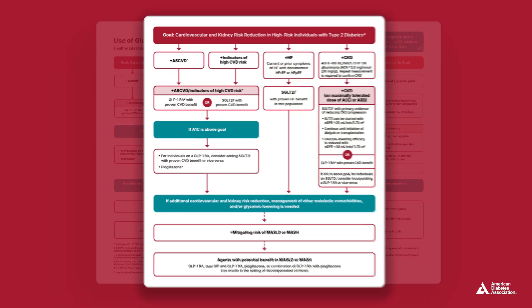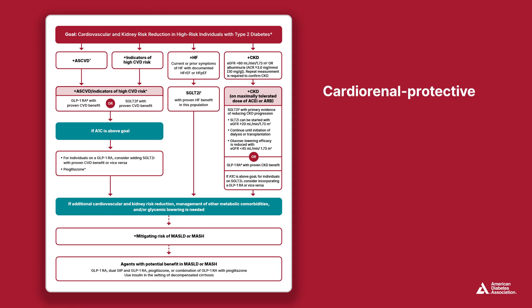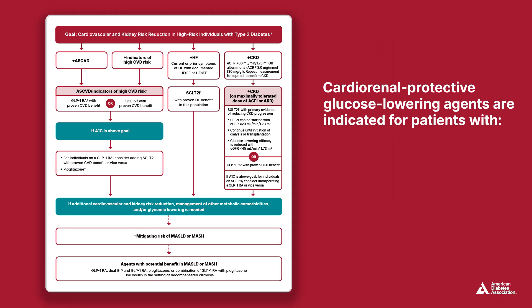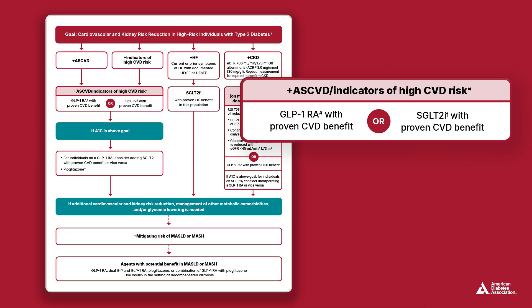We'll start with the cardio-renal side of the algorithm. Robust data on cardiovascular outcomes indicates the use of cardio-renal protective glucose-lowering agents for specific high-risk individuals. This includes those with atherosclerotic cardiovascular disease, heart failure, and chronic kidney disease. For people with established ASCVD or those at high risk of ASCVD who are over 55 years of age and have two or more additional risk factors, recommended treatment includes a GLP-1 receptor agonist with proven cardiovascular benefit or an SGLT-2 inhibitor with proven cardiovascular benefit.